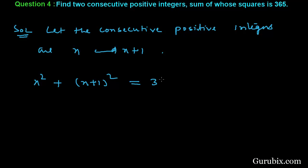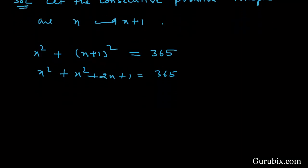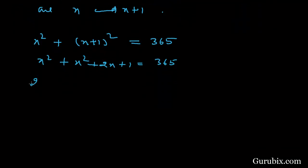According to the question, the sum of the squares of these two consecutive numbers is equal to 365. Now we shall expand the square of x plus 1: it equals x squared plus 2x plus 1, and that equals 365. So we have x squared plus x squared plus 2x plus 1 equals 365.